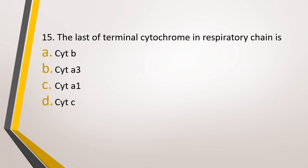Question number 15. The last of the terminal cytochromes in the respiratory chain is? Option A: Cytochrome B. Option B: Cytochrome A3. Option C: Cytochrome A. Option D: Cytochrome C. The correct answer is Option B — Cytochrome A3.